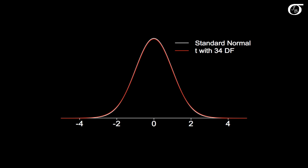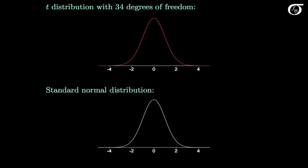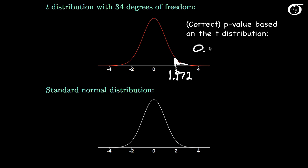Here I've plotted out in white a standard normal distribution, and in red a t-distribution with 34 degrees of freedom. They look very close, but the t-distribution still has slightly heavier tails and a lower peak. Here's our t-distribution with 34 degrees of freedom, and the observed value of our test statistic was 1.972. Since the alternative hypothesis is two-sided, the p-value is the area in the tail beyond the test statistic doubled. Using computer software, the correct p-value using the t-distribution is 0.0568.